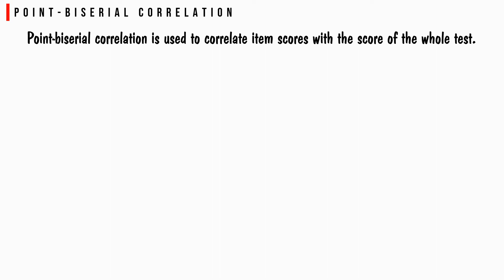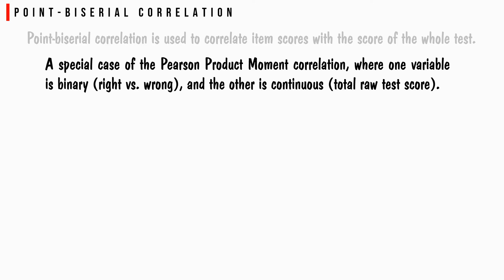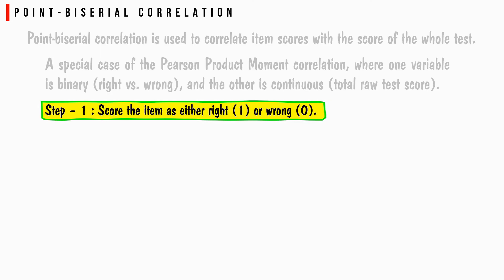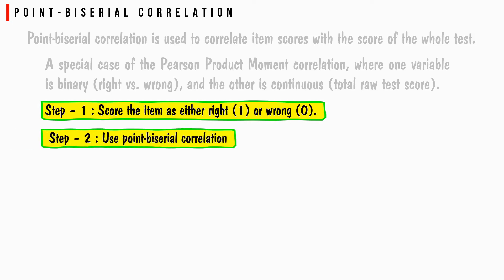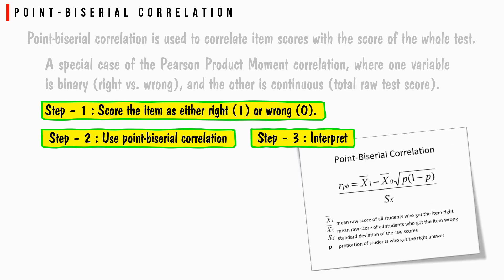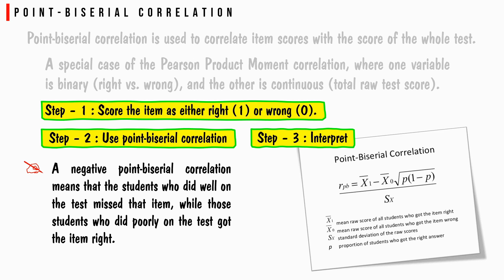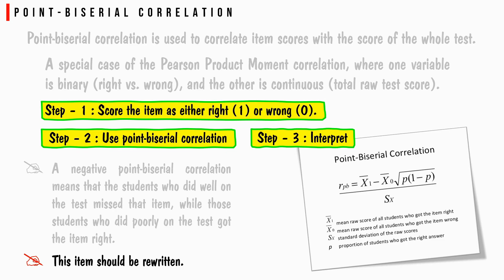Point biserial correlation is used to correlate item scores with the score of the whole test. It is a special case of Pearson product-moment correlation where one variable is binary (right vs. wrong) and the other is continuous (total raw test score). The steps are: first, score the item as either right (1) or wrong (0); second, apply the point biserial correlation formula; third, interpret the result. A negative point biserial correlation means students who did well on the test missed that item, and those who did poorly got it right — such items should be rewritten.